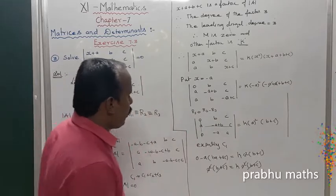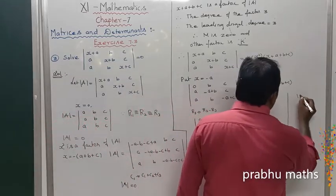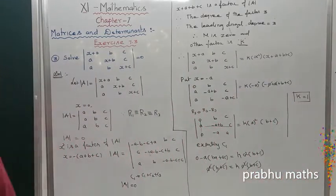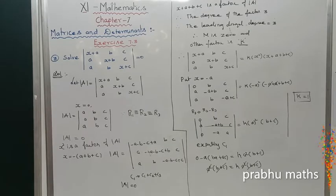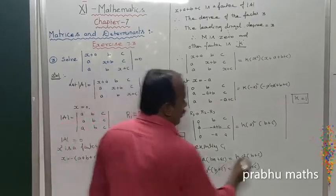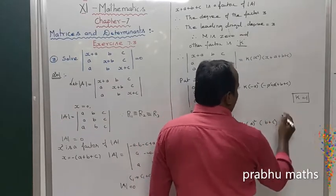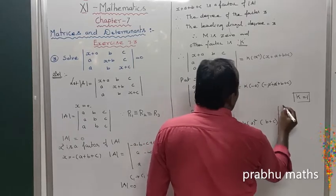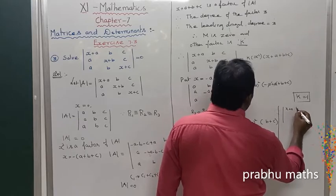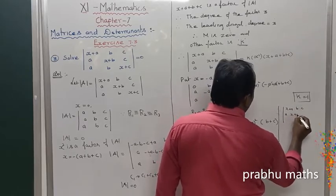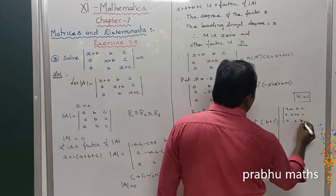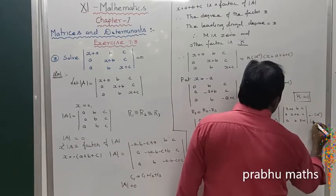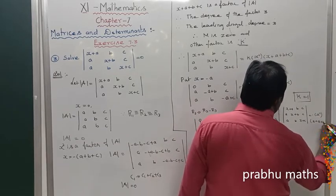The value of k is equal to 1. But checking the sign, k is equal to minus 1. Therefore, the determinant of (x+a), b, c / a, (x+b), c / a, b, (x+c) is equal to minus x squared times (x plus a plus b plus c).